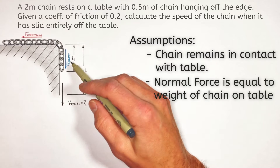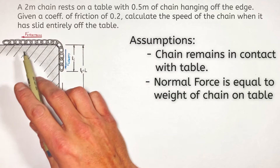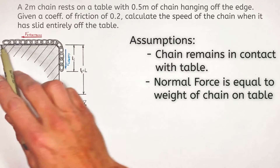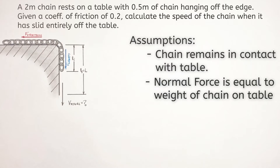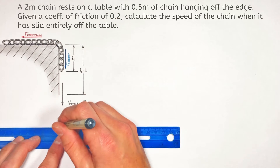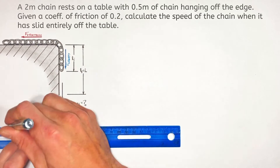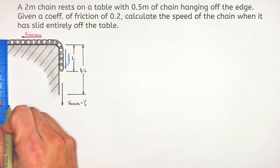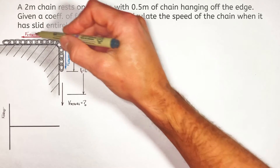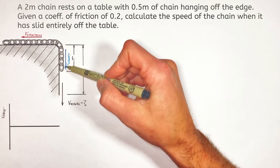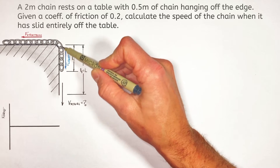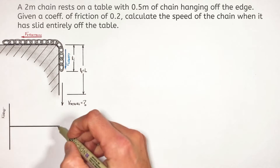The other assumption is that the normal force between the table and the chain is equal only to the weight of the chain resting on the table. In order to handle the complexity of this problem, the first thing I want to do is graph our two forces — which are causing the chain to either speed up or slow down — as a function of how much chain is hanging off the edge of the table.